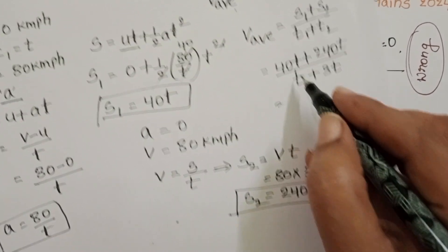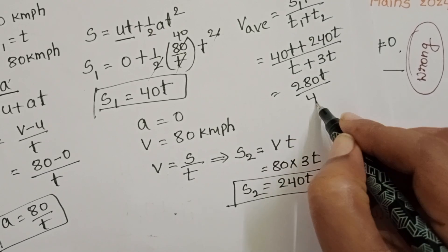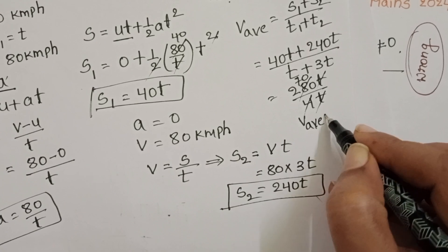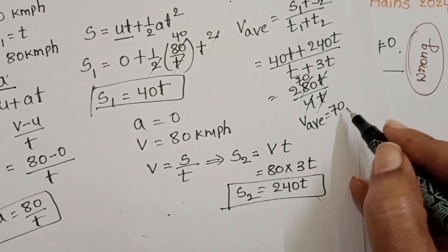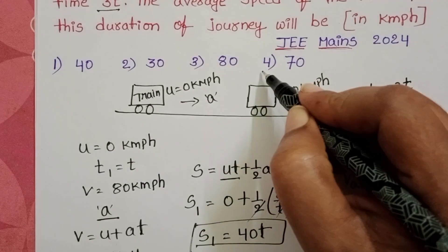40 plus 240. 280 T by 4T. 4 1s, 4 70s. Average speed is equals to 70 km per hour. 4th option is correct.